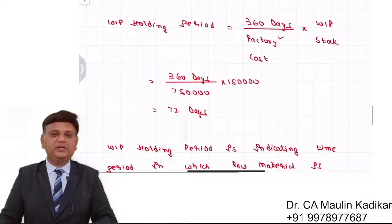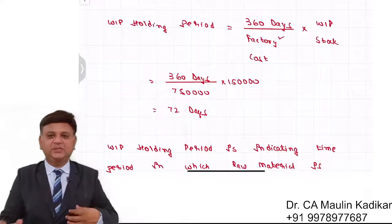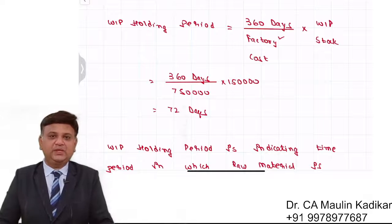So WIP holding period is 72 days. Again, the assumption is made that the production will take place evenly throughout the year.